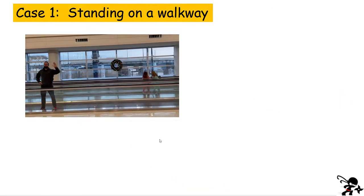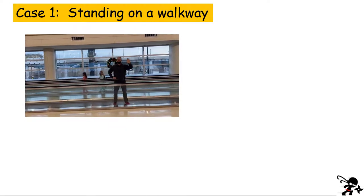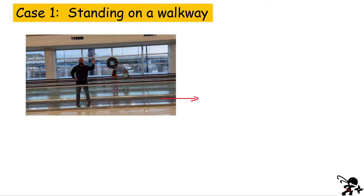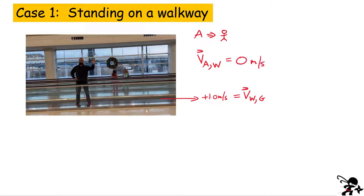Case 1: I am simply standing still on the walkway while the walkway moves to the right at +1.0 m/s. I'll write that as V(walkway, ground) = +1.0 m/s. I'm object A. Since I'm not walking relative to the walkway — my feet stay on the same spot — V(a, walkway) = 0 m/s.